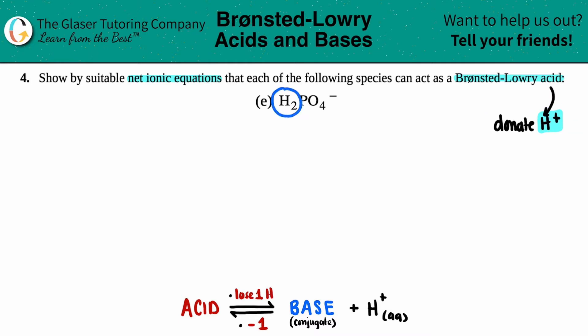And especially if you see hydrogens in the front of a compound, it's going to be an acid. So that's kind of how you know that this can act as an acid. It has hydrogens in the front of the compound.